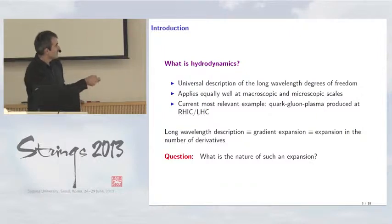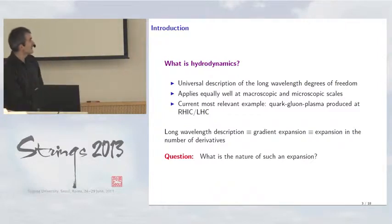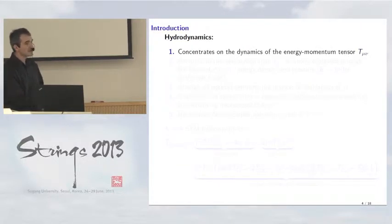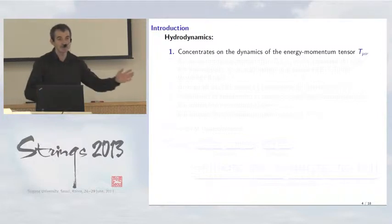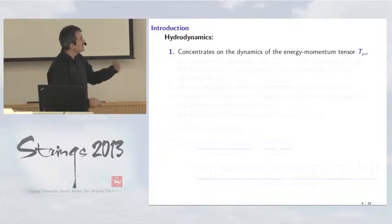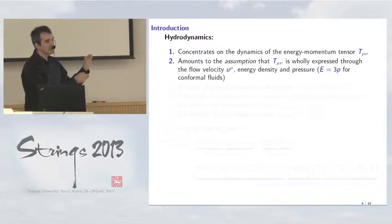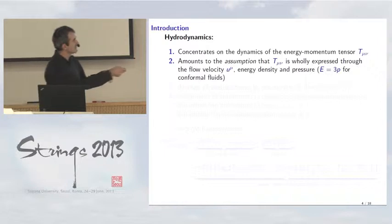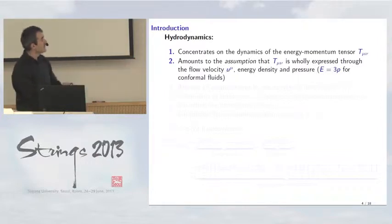Let me describe in more detail how this expansion in the number of derivatives appears. Hydrodynamics concentrates on the dynamics of the energy-momentum tensor T-mu-nu — the energy density and momentum flow. It amounts to the assumption that the whole T-mu-nu is completely described only in terms of five quantities: the three components of flow velocity, energy density, and pressure. The energy density and pressure are connected by an equation of state, equal to epsilon equals 3p for conformal fluids. I will only consider conformal fluids and the special case of N=4 super-Yang-Mills theory.